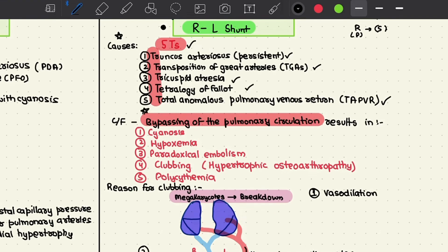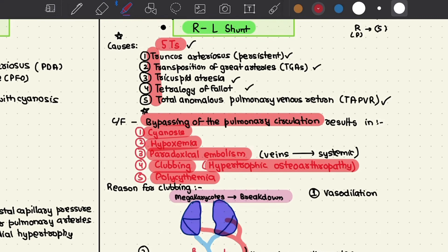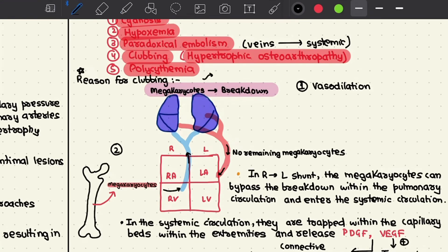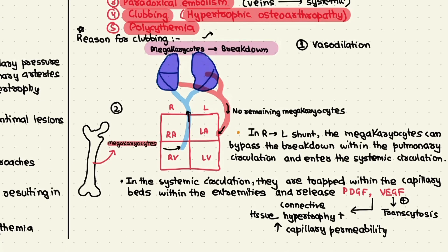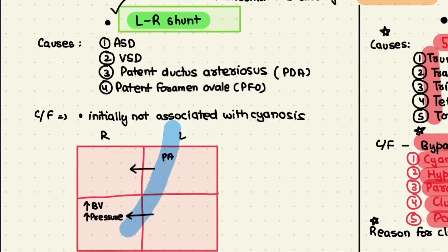The major clinical features of right-to-left shunt result from bypassing of the pulmonary circulation, causing cyanosis and hypoxemia. It can also result in paradoxical embolism — where thromboembolism from the veins crosses to the systemic circulation and lodges in a systemic blood vessel — as well as clubbing (hypertrophic osteoarthropathy) and polycythemia to compensate for hypoxia. The mechanism of clubbing: normally, megakaryocytes released from bone marrow are broken down by the pulmonary capillaries. In right-to-left shunt, they bypass the pulmonary circulation, enter systemic capillary beds in the extremities, and release PDGF and VEGF, promoting connective tissue hypertrophy and increased capillary permeability.